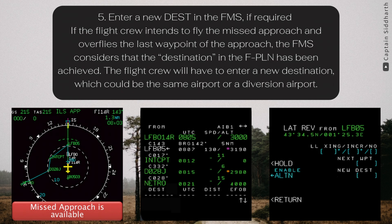Step 5: Enter a new destination in the FMS, if required. If the flight crew intends to fly the missed approach and overflies the last waypoint of the approach, the FMS considers that the destination in the flight plan has been achieved. The flight crew will have to enter a new destination, which could be the same airport or a diversion airport.